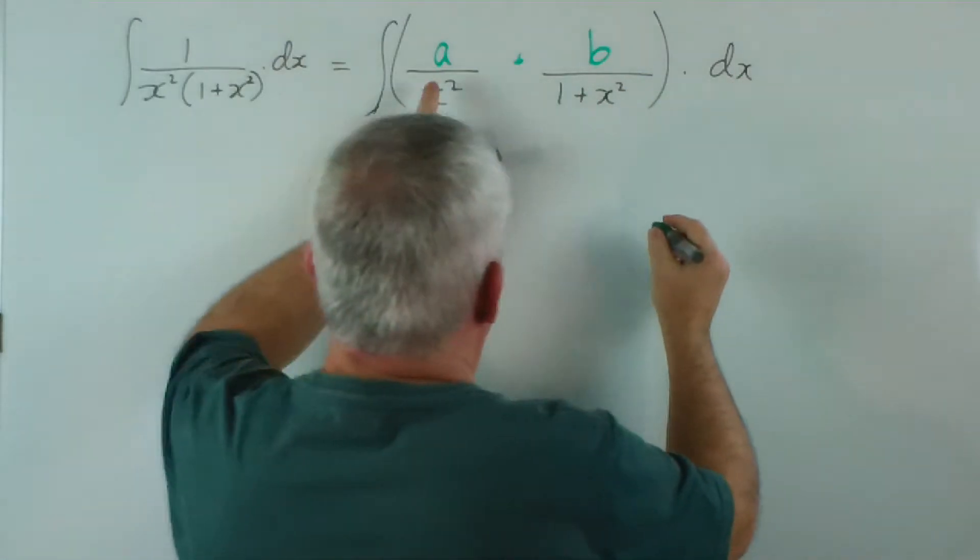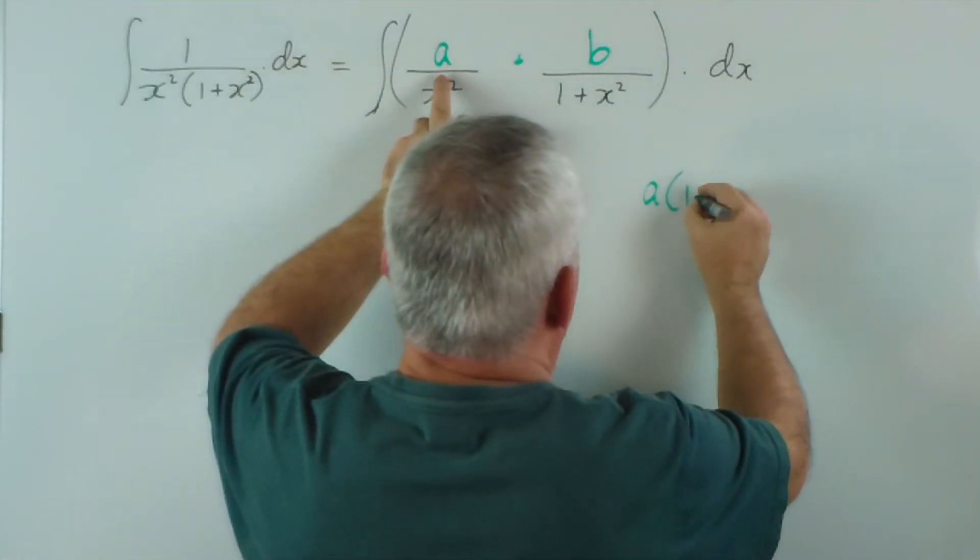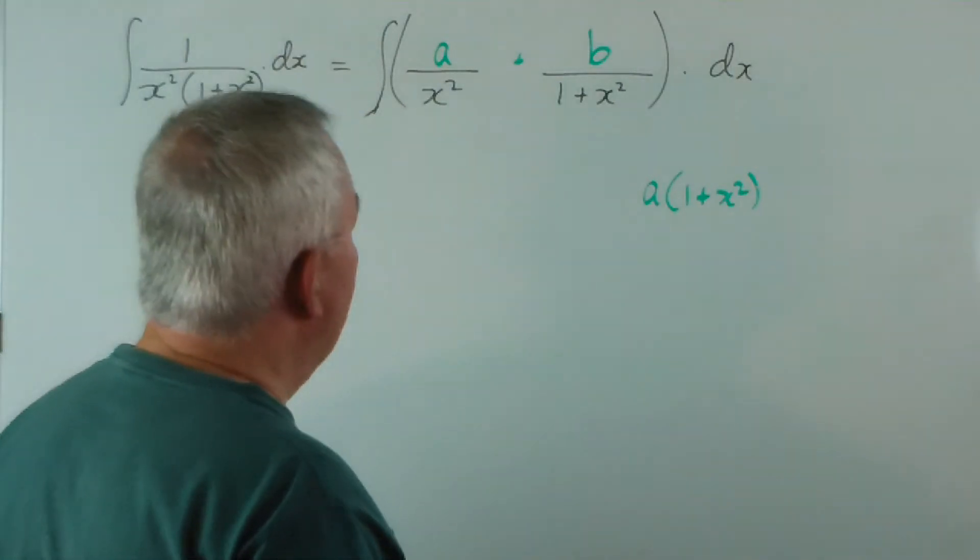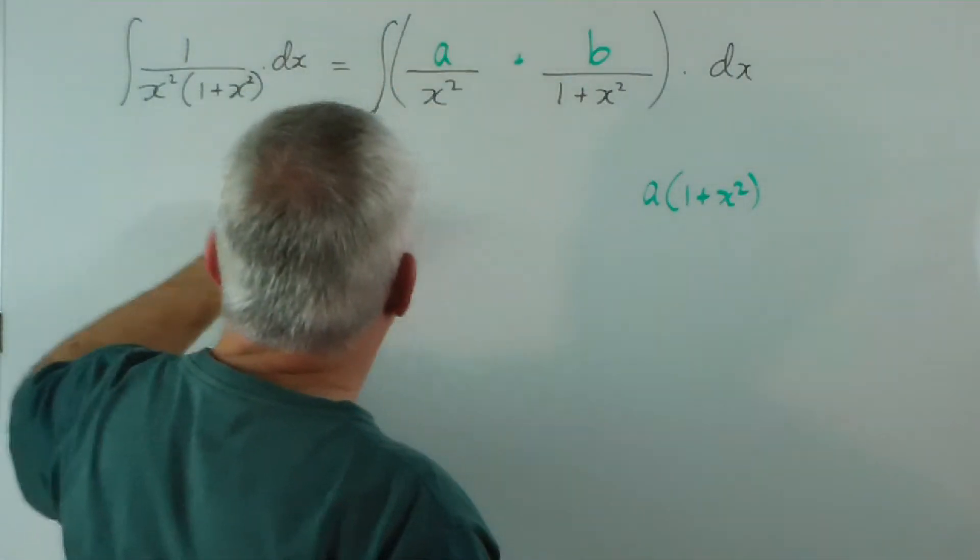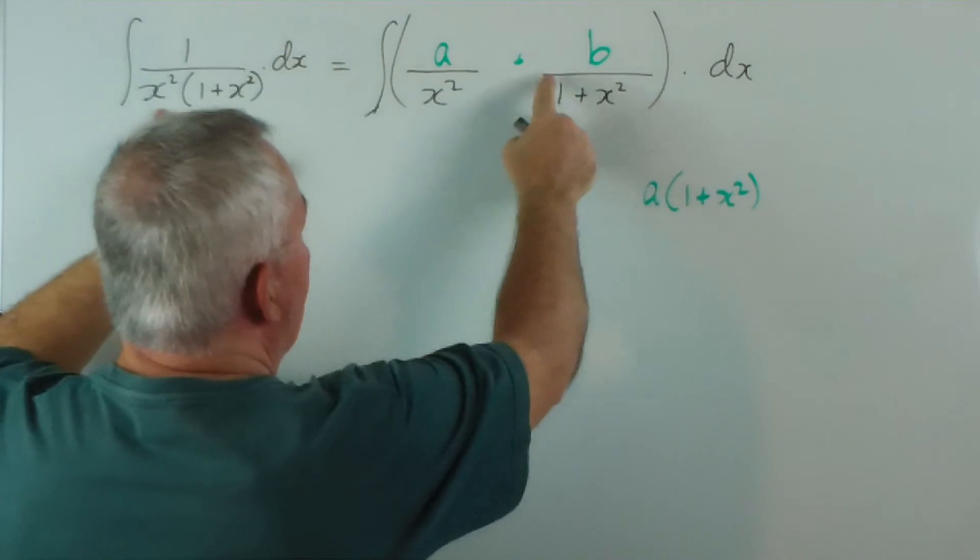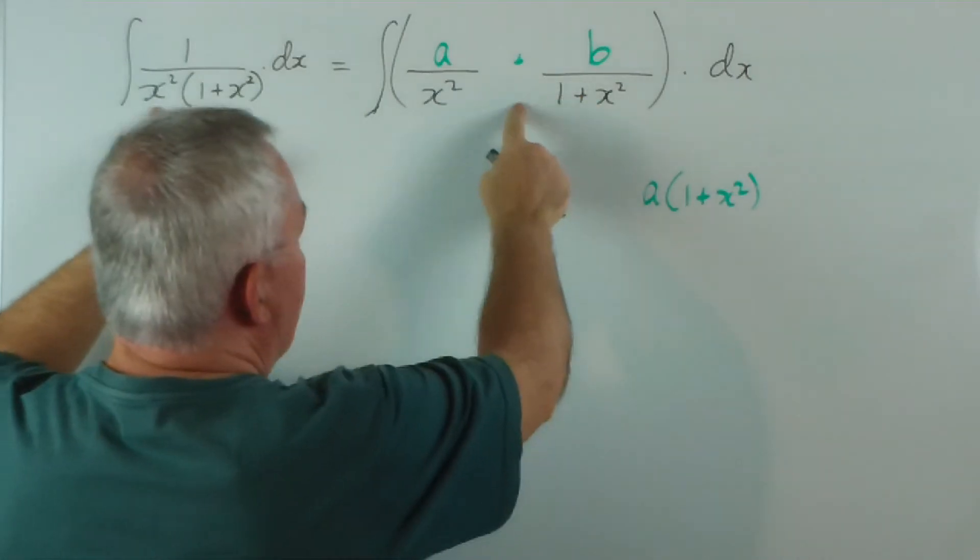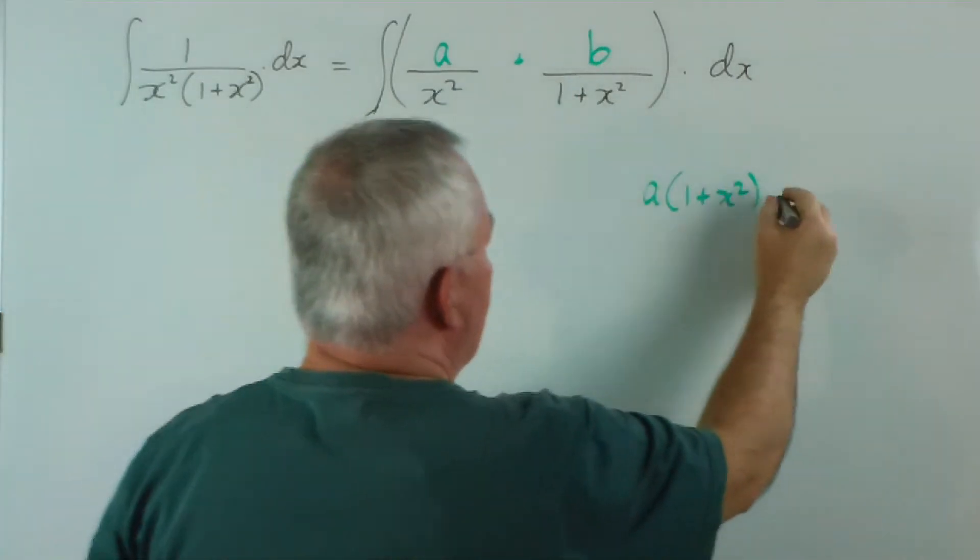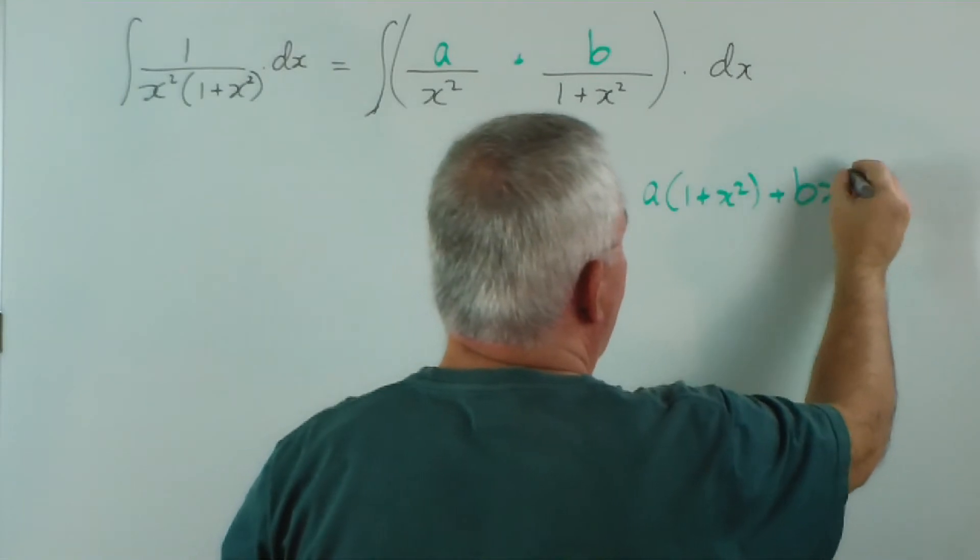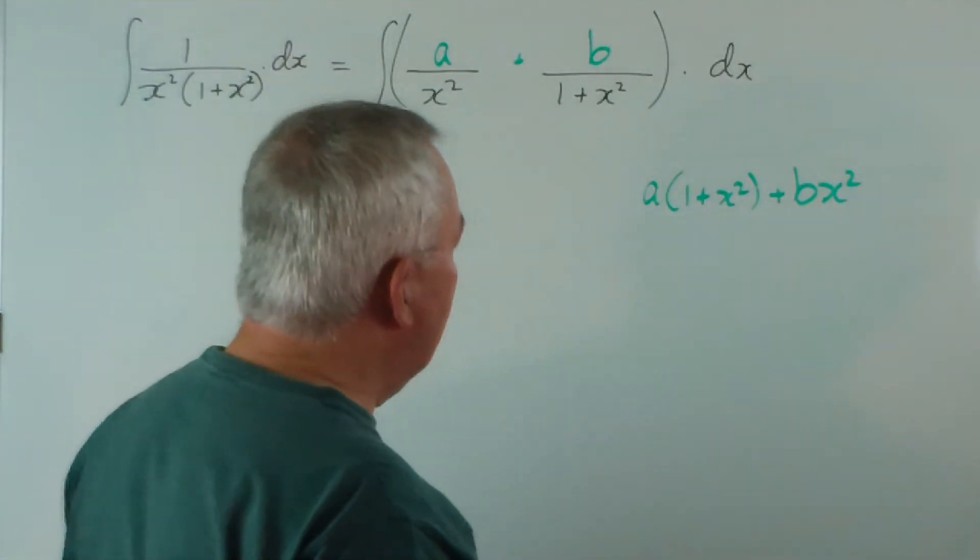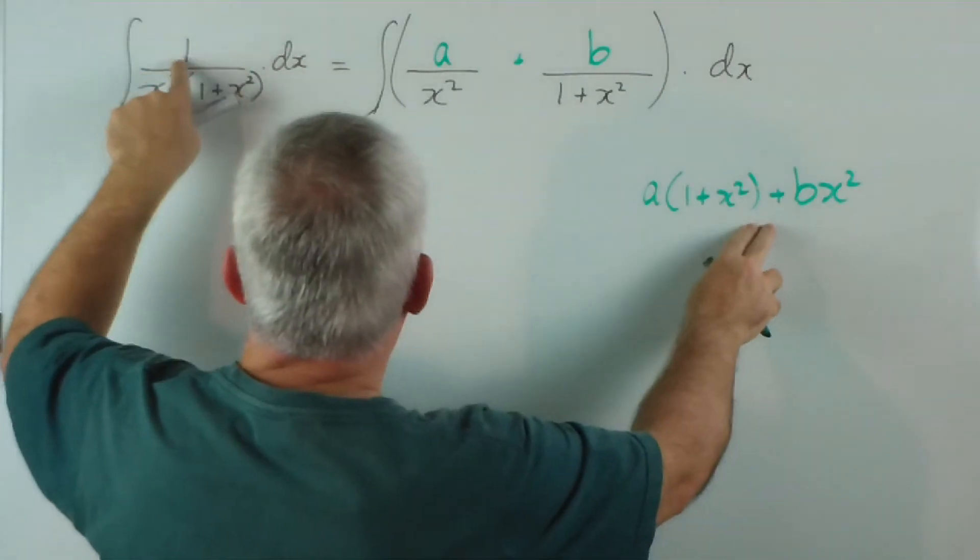I'm just going to check the numerator here. That's what we would get. And here we would multiply, to get this denominator, the top and bottom by x squared. x squared times that, x squared times b. And of course, we want this numerator to equal 1.